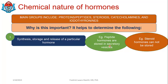Insulin can be stored in secretory vesicles because it is a peptide. We'll see later why peptide hormones can be stored in secretory vesicles. On the other hand, a steroid hormone like cortisol cannot be stored in secretory vesicles.